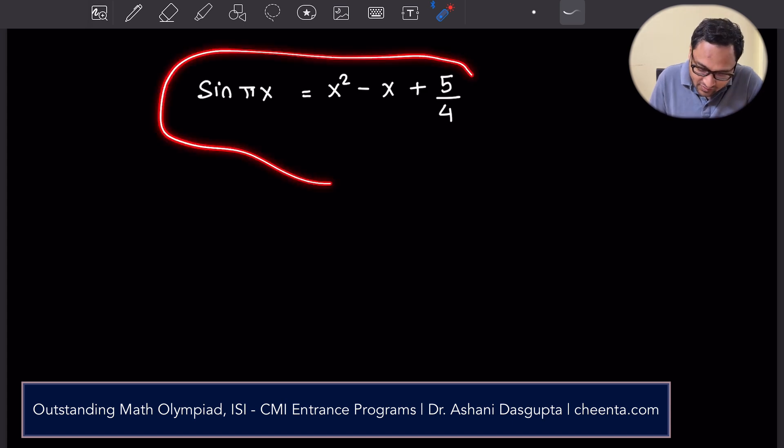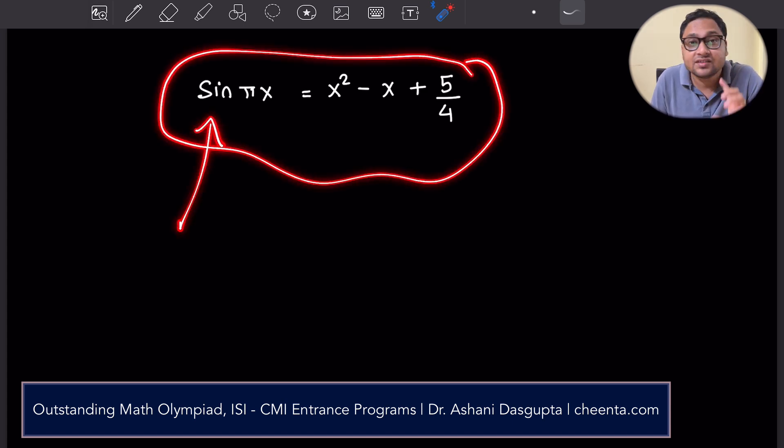Look at this equation. The left hand side is trigonometric sine of pi x, and the right hand side is a quadratic equation. How do you equate a trigonometric equation with a quadratic equation? This sort of question comes up in mathematical olympiads like IOQM, American Math Competition. This one is from actually ISI BSTAT BMAT entrance. Let's learn about it using this particular problem.